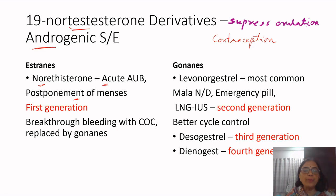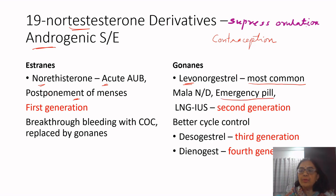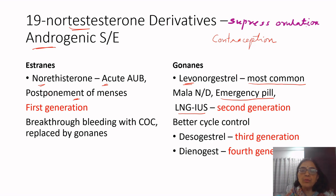Norethisterone is first generation and causes breakthrough bleeding, so it has been replaced by gonanes. In the gonanes, levonorgestrel is the second generation progestogen and currently the most commonly used progestogen worldwide. It is used in combined oral contraceptive pills, as a levonorgestrel-only emergency pill (drug of choice), in Mala-N and Mala-D, and as the levonorgestrel-releasing intrauterine system (LNG-IUS), sometimes called a medical hysterectomy due to its effectiveness in abnormal uterine bleeding. Levonorgestrel has better cycle control than norethisterone.